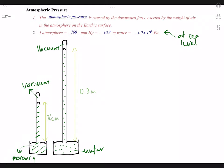The atmospheric pressure lesson. The atmospheric pressure is caused by the downward force exerted by the weight of air in the atmosphere on the Earth's surface.